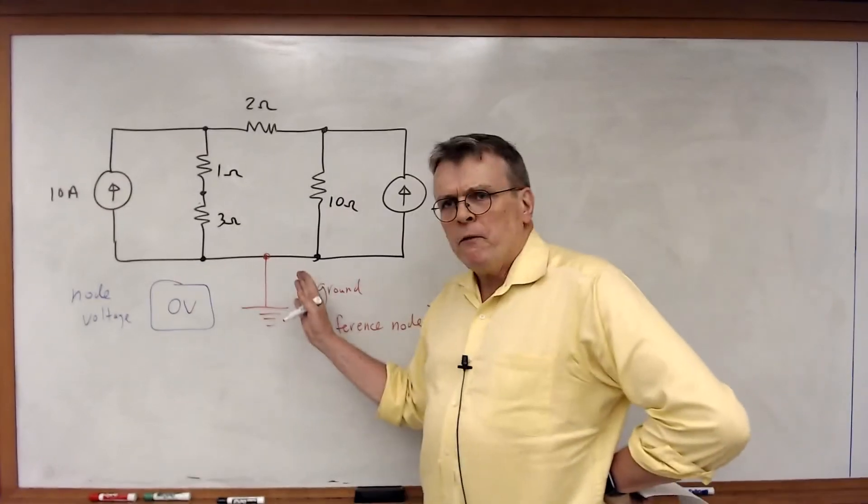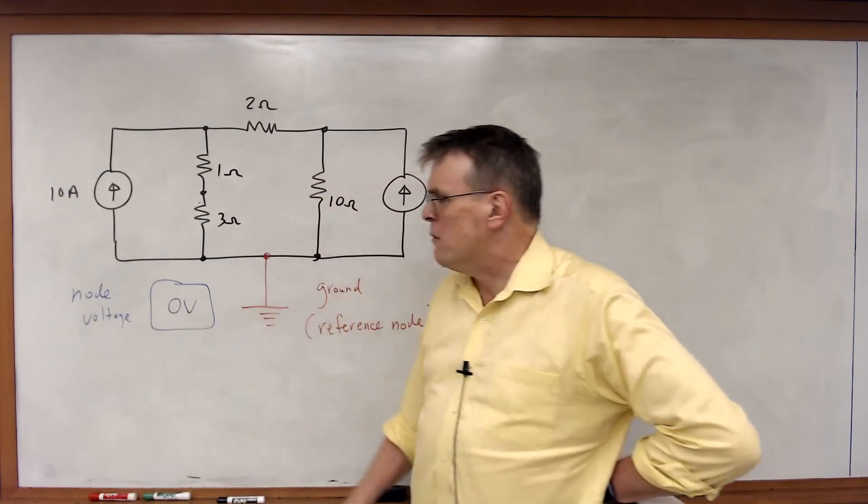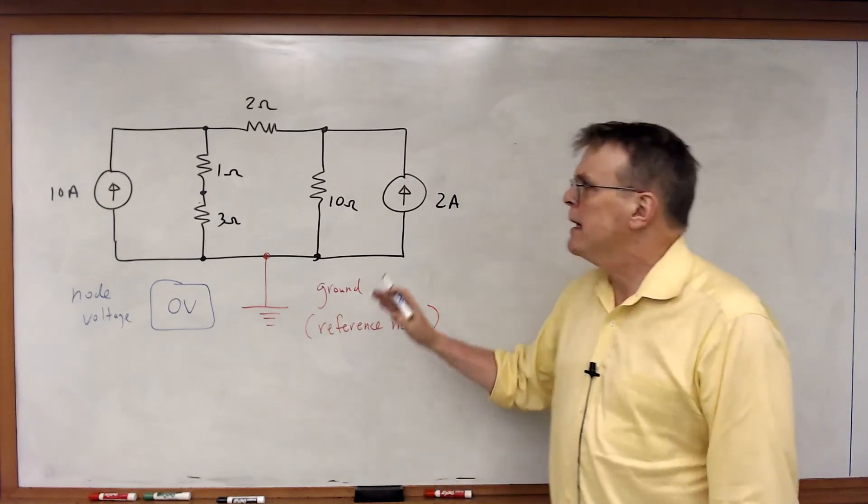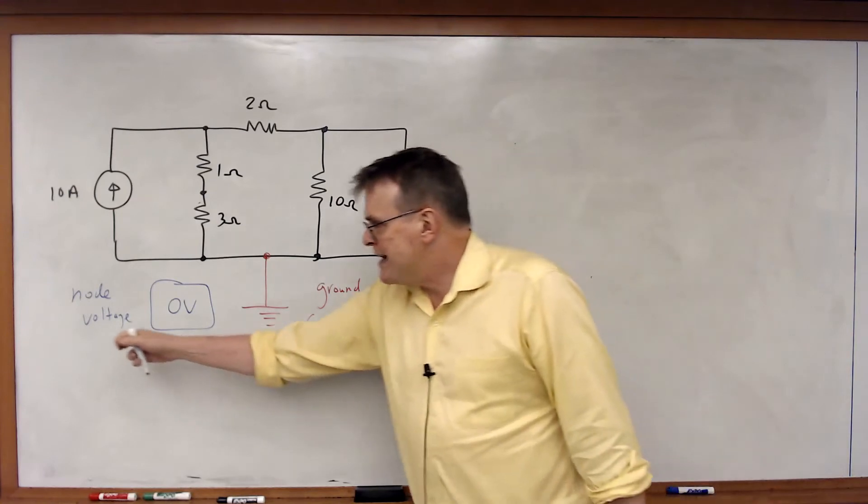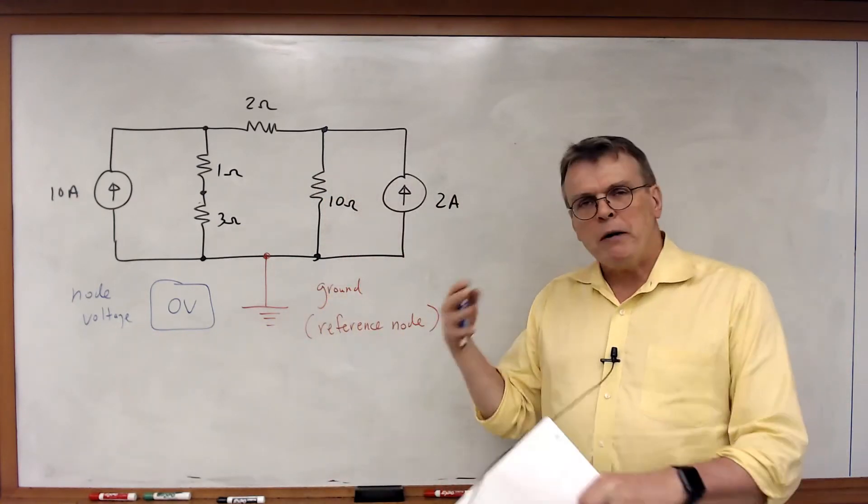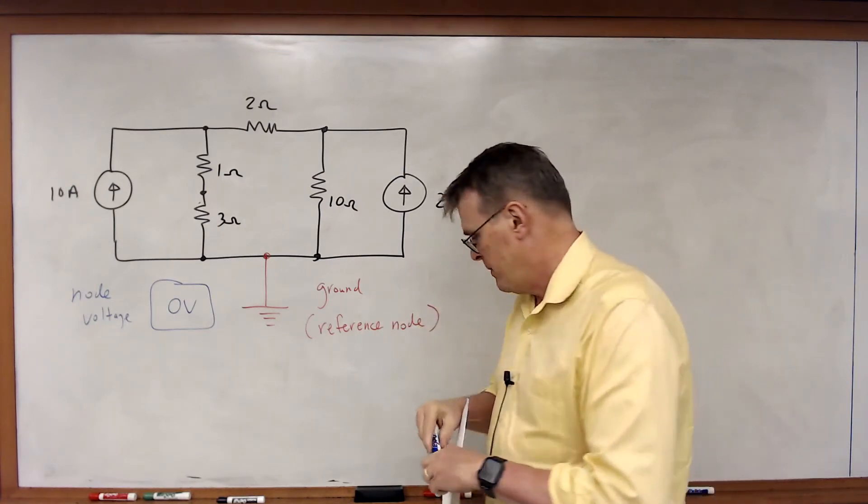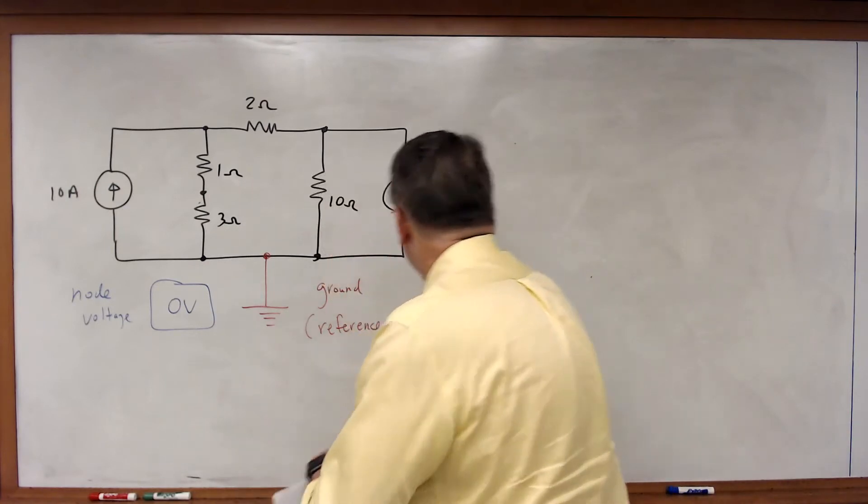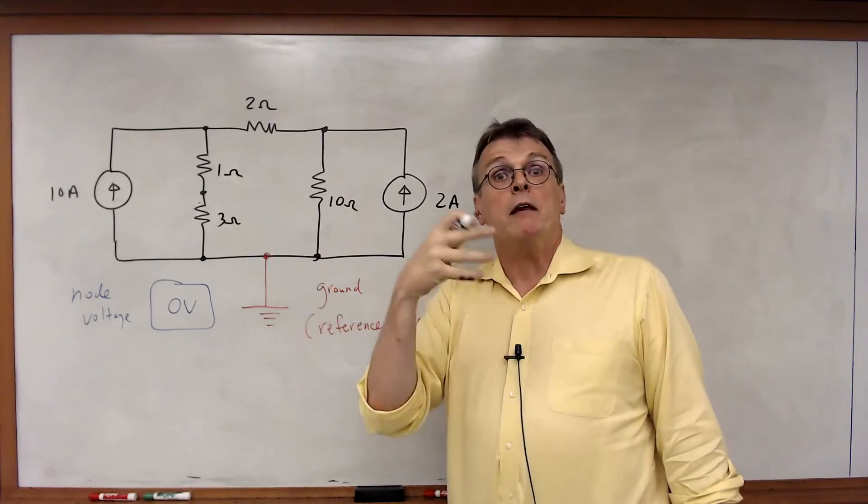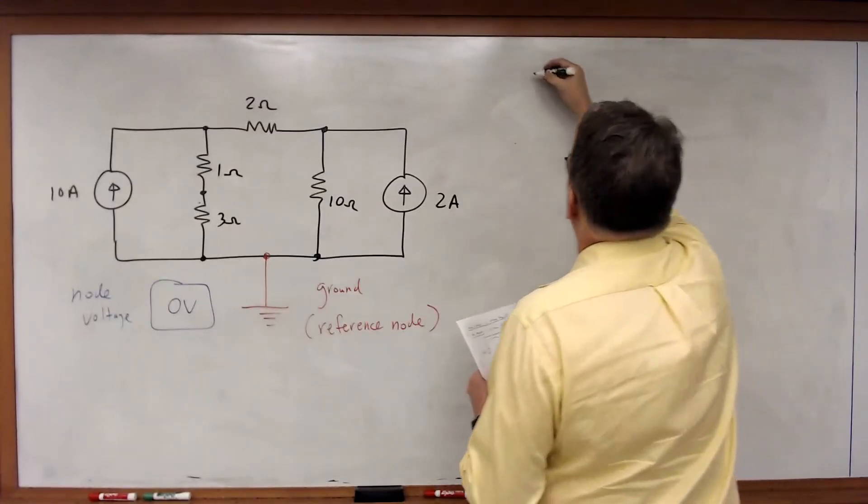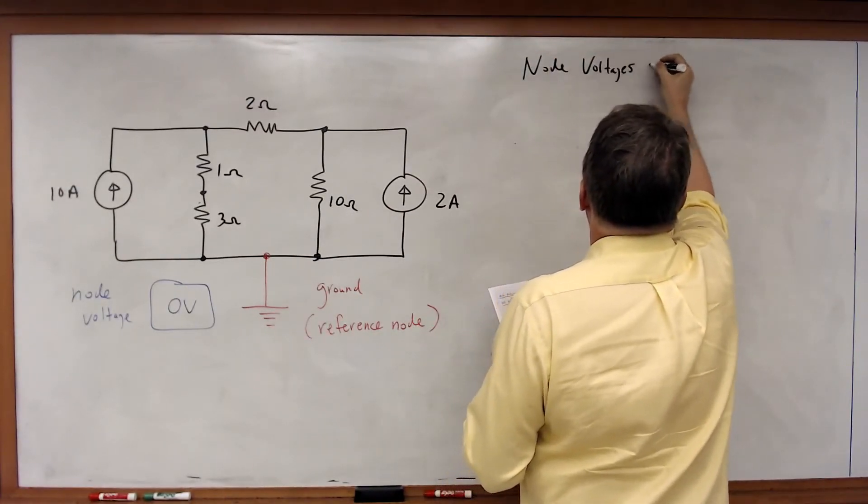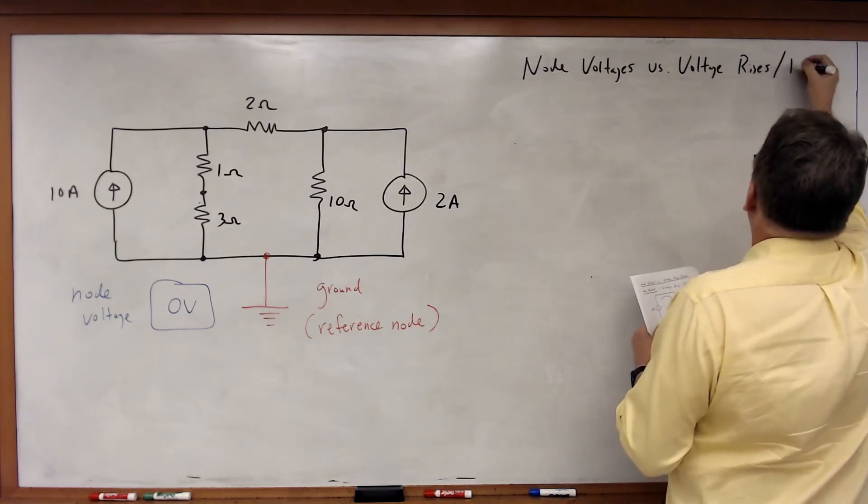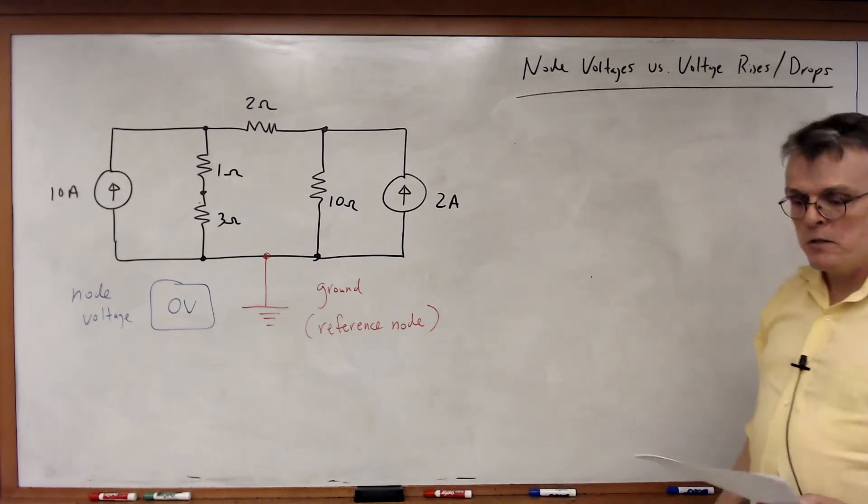Now before we go any further, this leads to a question. I call this a node voltage of zero. What do I mean by a node voltage? Because so far you've dealt with voltage rises and voltage drops. So before we start going any further into nodal analysis, we have to define exactly what a node voltage means, where it comes from, and how we can relate that to what we've already seen in terms of voltages across elements.